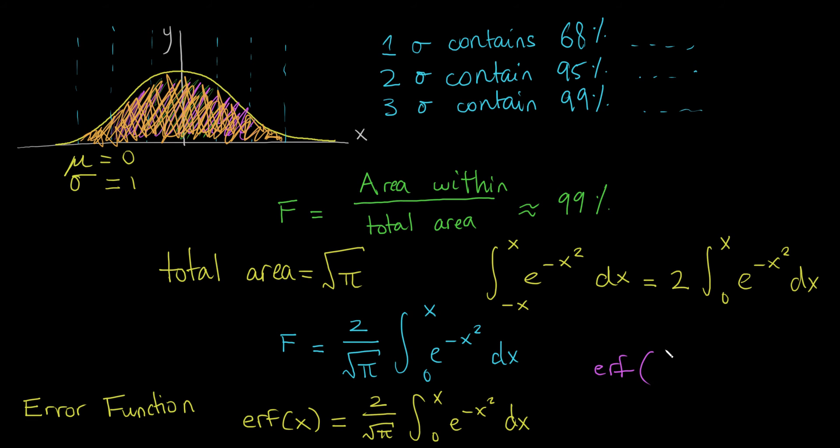You want to say the ERF, the error function of how many standard deviations. So let's say you wanted two standard deviations, but it's x standard deviations. And you divide that by the square root of 2. And then this value right here is all of these numbers here. These numbers come out of this function. So the error function of 3 divided by the square root of 2 is 0.99, and then infinitesimal places.